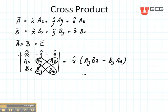In order to find the Y component, and I'm going to add my little minus sign just to remind myself, we eliminate the row and column that Y is in and then we do the remaining determinant which gives us AXBZ minus AZBX.